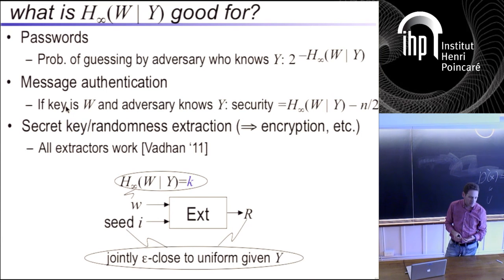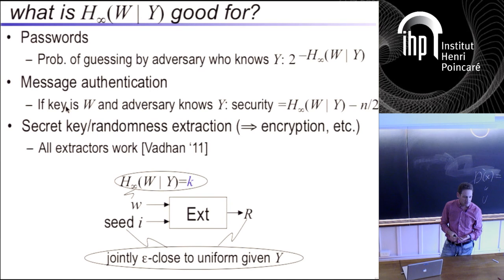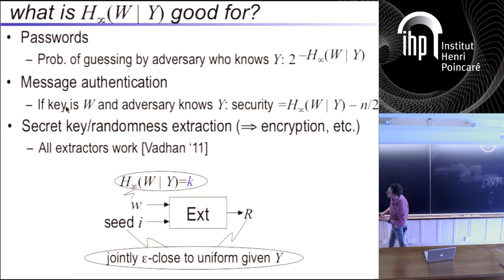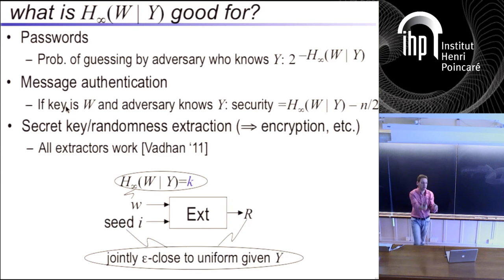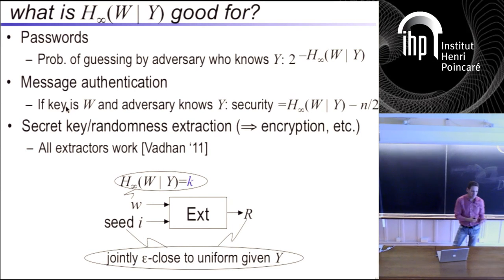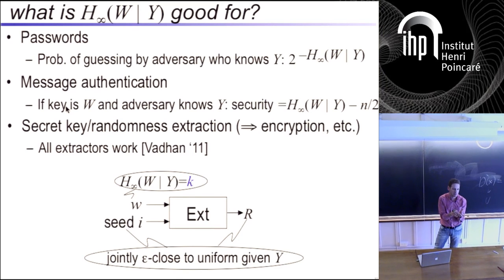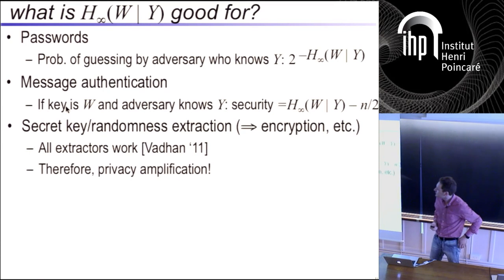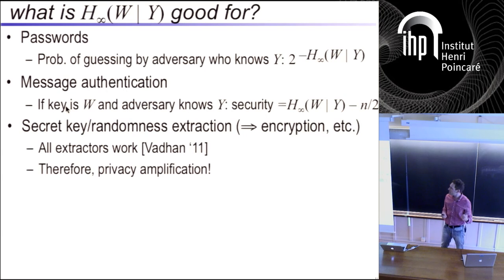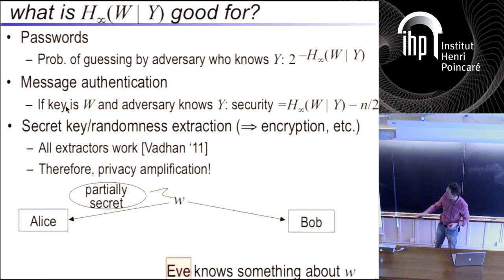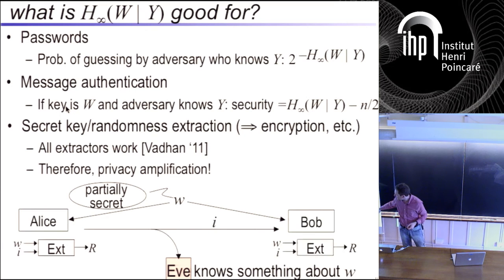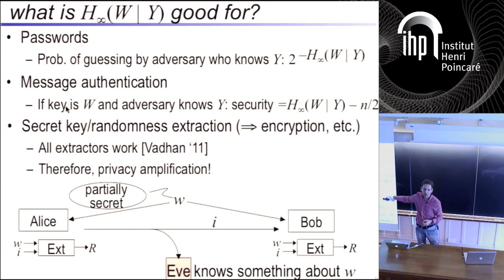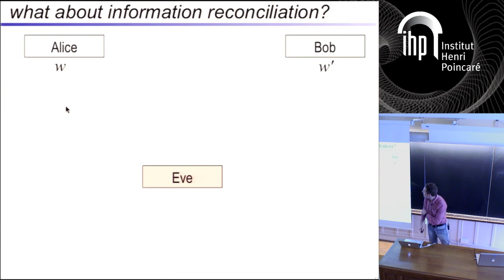The definition of security in the MAC setting is the probability that the adversary successfully modifies the message and tag in an undetectable way — it's a probability ultimately. Back to privacy amplification: we now know exactly how much to extract — up to the average min-entropy.